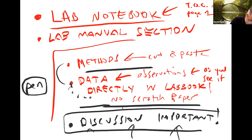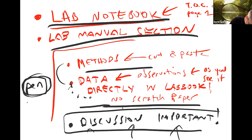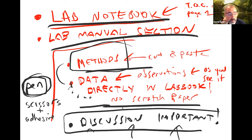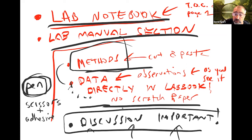It has to be in pen. You need a lab notebook, the lab manual section, a pen, scissors, and some adhesive to paste the methods in. If you're reading over the procedure, it should all look pretty familiar now after today's class. When we come in on Tuesday, you'll have a good sense of what we're doing, why, and what we expect to find. There is no formal pre-lab — you don't have to write anything up ahead of time.